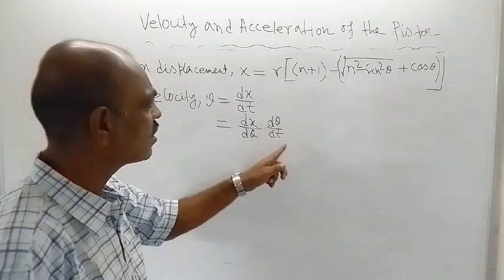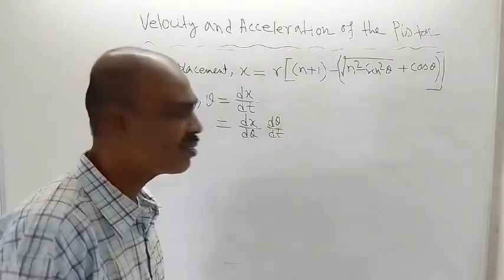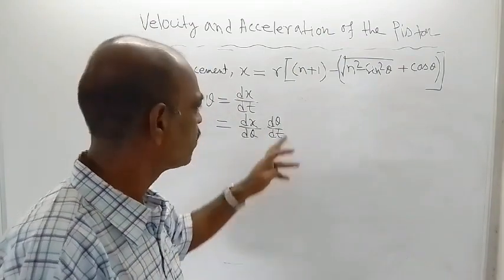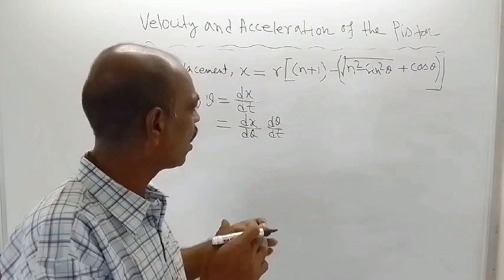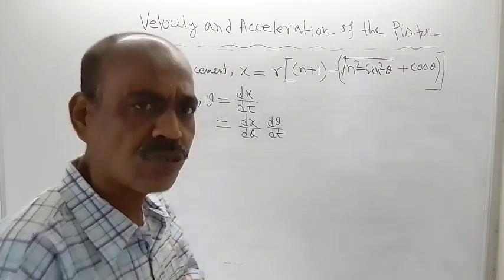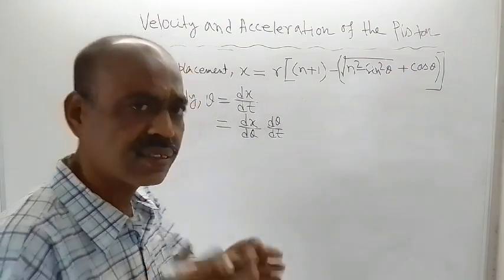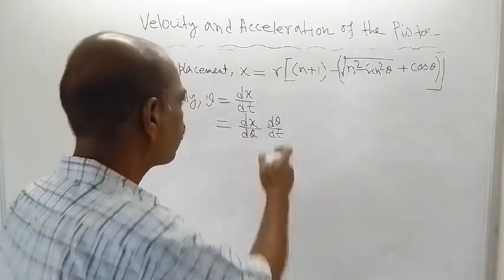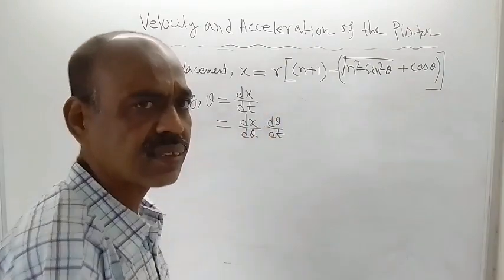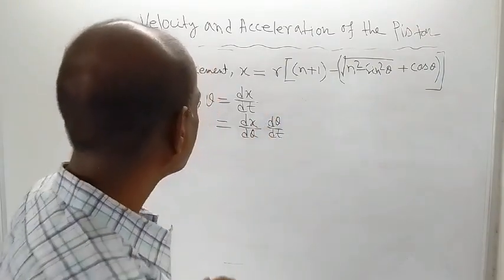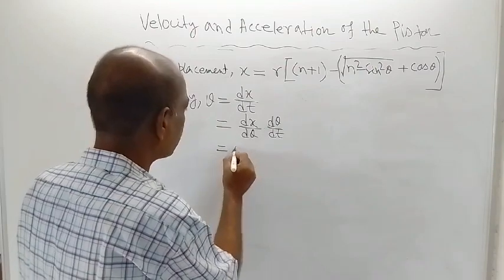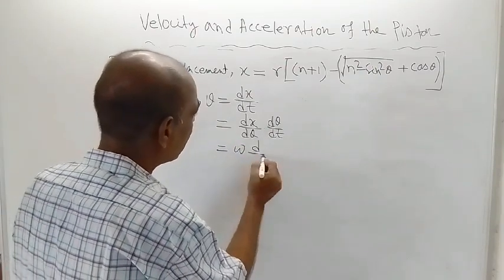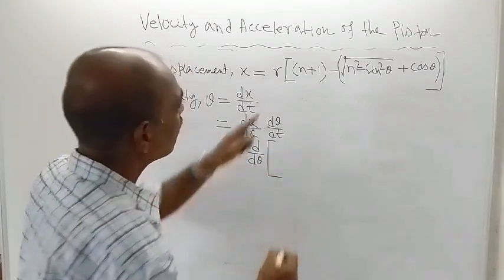Now, what is dθ/dt? dθ/dt is the rate of change of angular displacement with respect to time, which is angular velocity ω. So dθ/dt = ω. Writing ω first, and then taking d/dθ of the displacement expression.